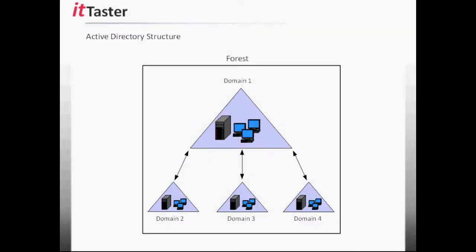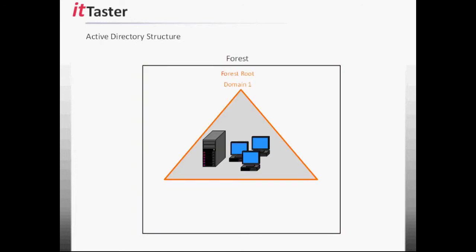Let's begin with a quick overview of Active Directory forests and domains to give you a rough idea of what's going on behind the scenes when we install and configure a brand new Active Directory implementation for the first time. This diagram is an example of a fairly small Active Directory structure. We can see a forest and four domains within it. A forest is a complete instance of Active Directory — a container for a complete Active Directory implementation. A domain is a container object that holds all of the objects for the domain, including domain controllers, computers, users, and security policies.